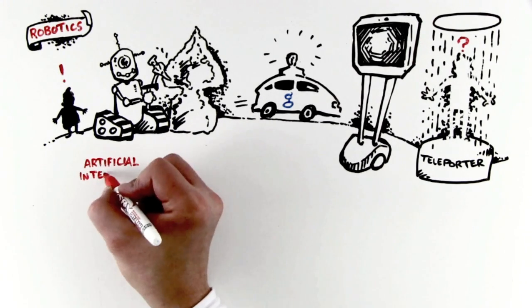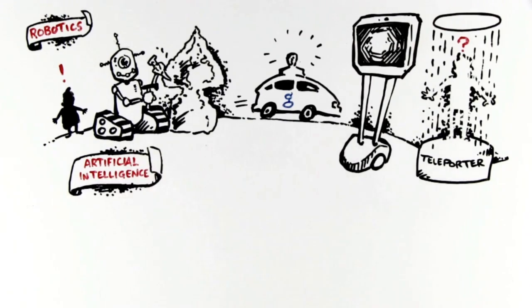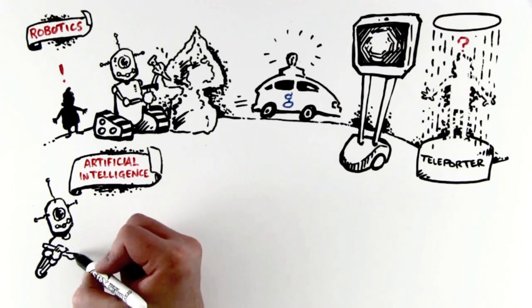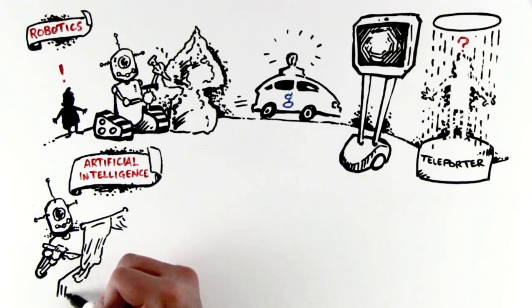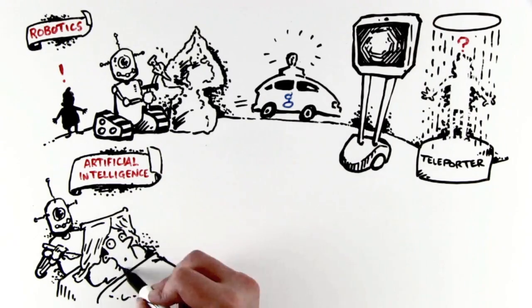But tomorrow's robots will be combined with another exponential technology, artificial intelligence, the ability of a computer to understand human language, take direction, provide answers and opinions, taking our robots from those that stock shelves to those you trust to expertly perform brain surgery.